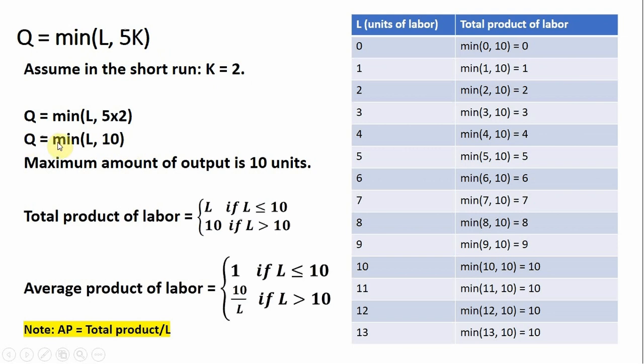Given this fixed proportions production function, in the short run we want to find the total product of labor, average product of labor, and marginal product of labor equations, and graph each one. The maximum output for this firm is going to be 10 units in the short run. For example, if L were 100 or 200, the minimum of 200 and 10 is still 10, so the maximum output is 10.